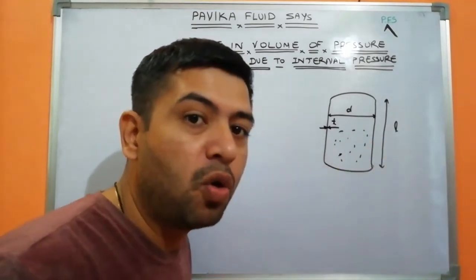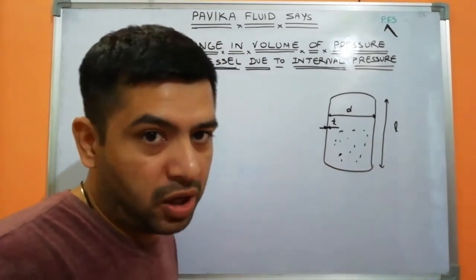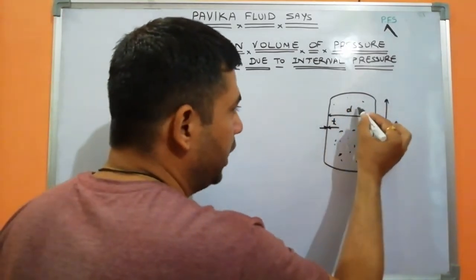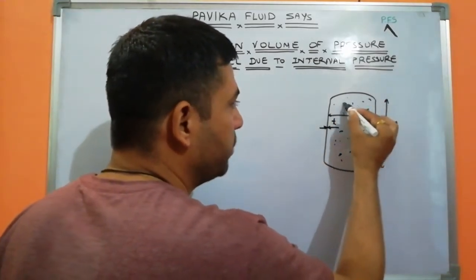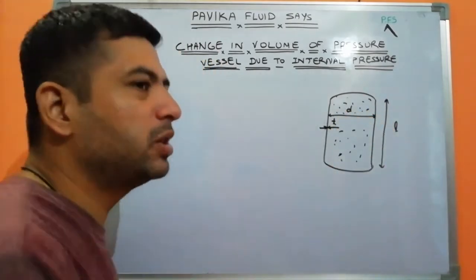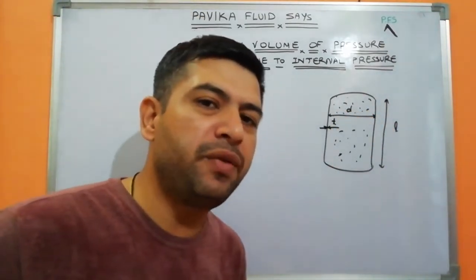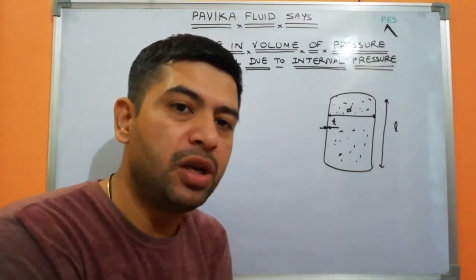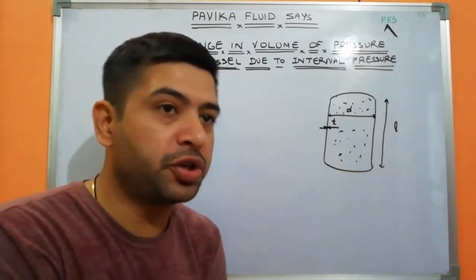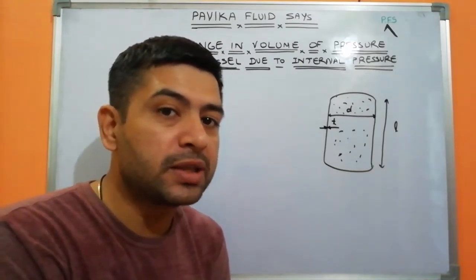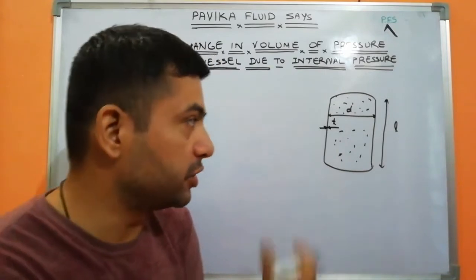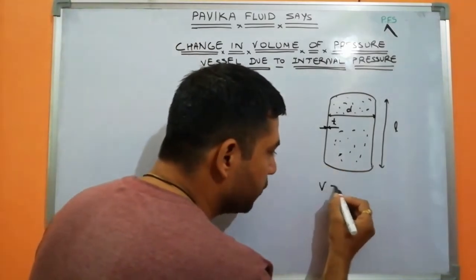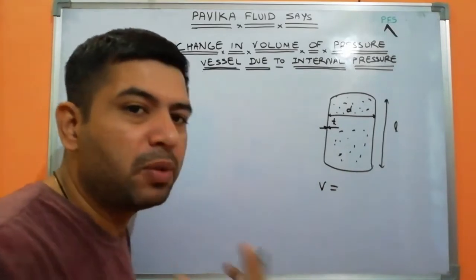I already have six to seven videos on different chapters of strength of materials, including pressure vessels — Lame's theory, longitudinal stress, hoop stress (also called circumferential stress). Now we'll go for the change in volume formula. First, we must know the volume of a cylinder.